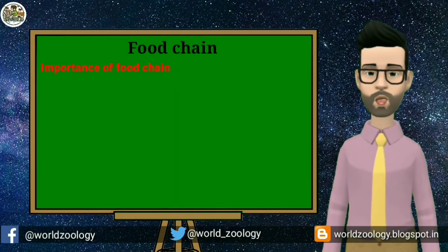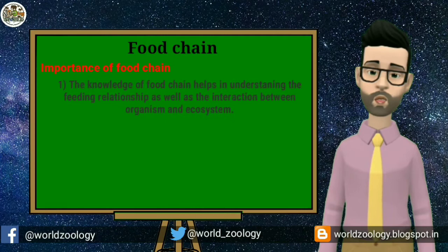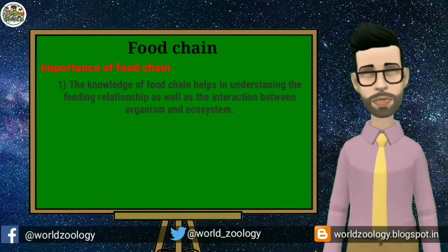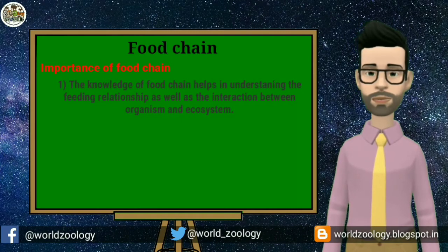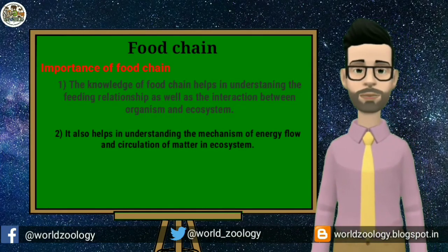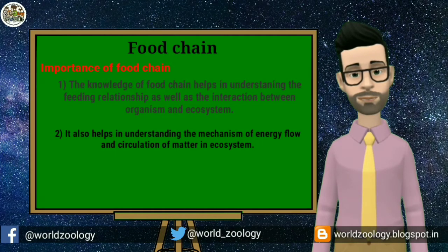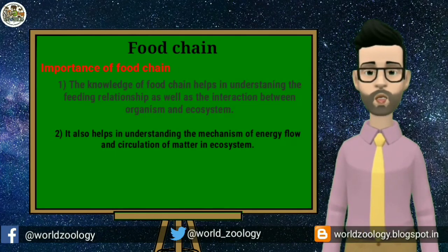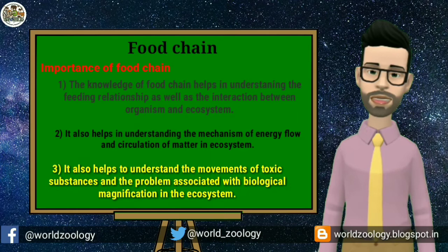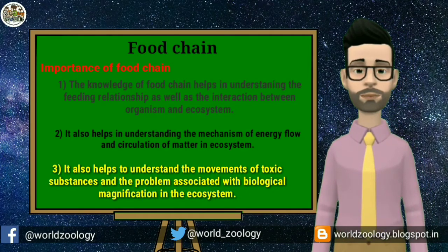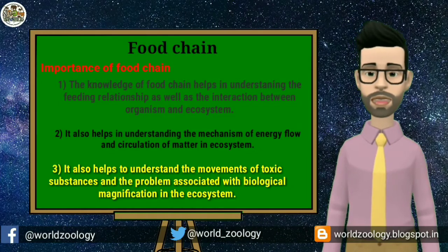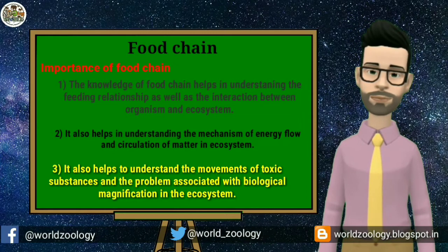Importance of food chain. First, the knowledge of food chain helps in understanding the feeding relationships as well as the interaction between organisms and the ecosystem. Second, it also helps in understanding the mechanism of energy flow and circulation of matter in the ecosystem. Third, it also helps to understand the movements of toxic substances and the problems associated with biological magnification in the ecosystem.